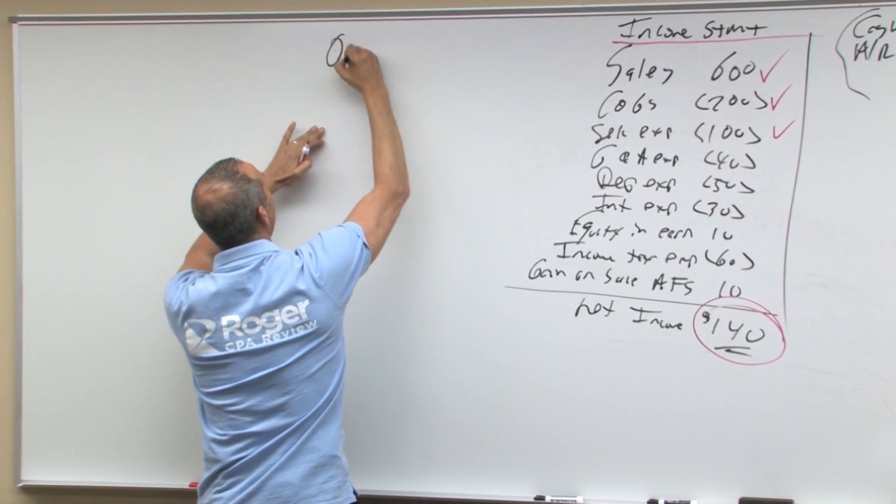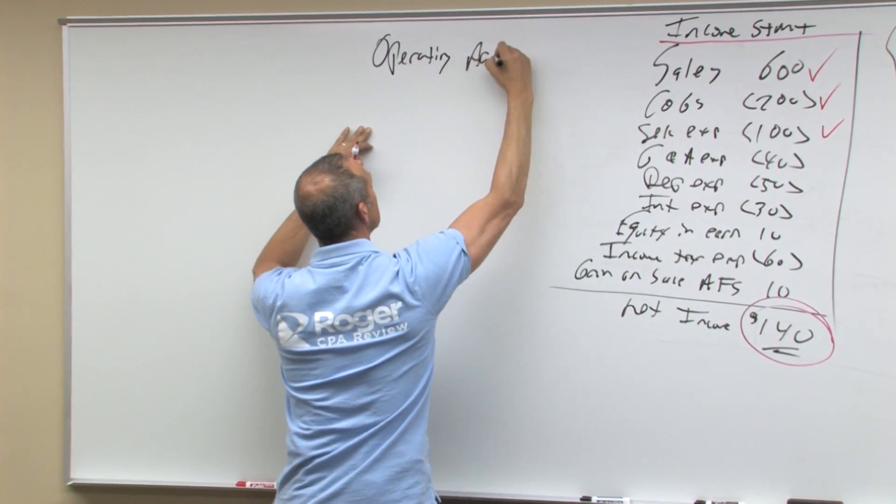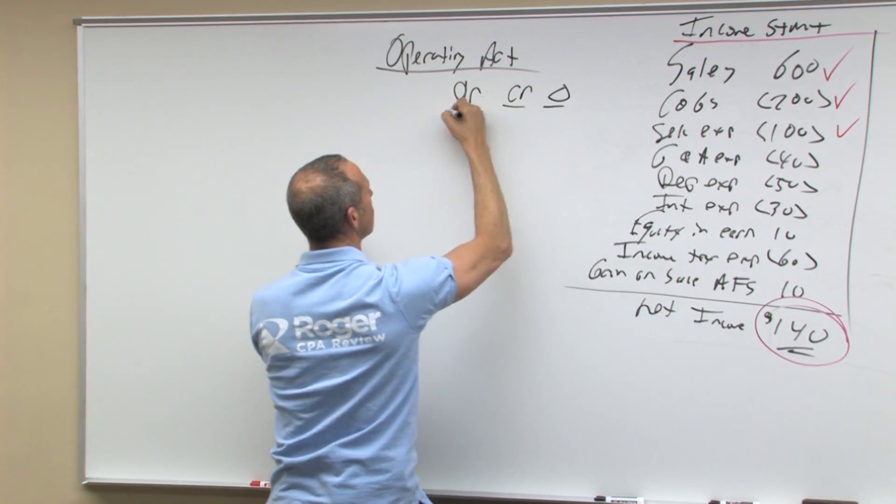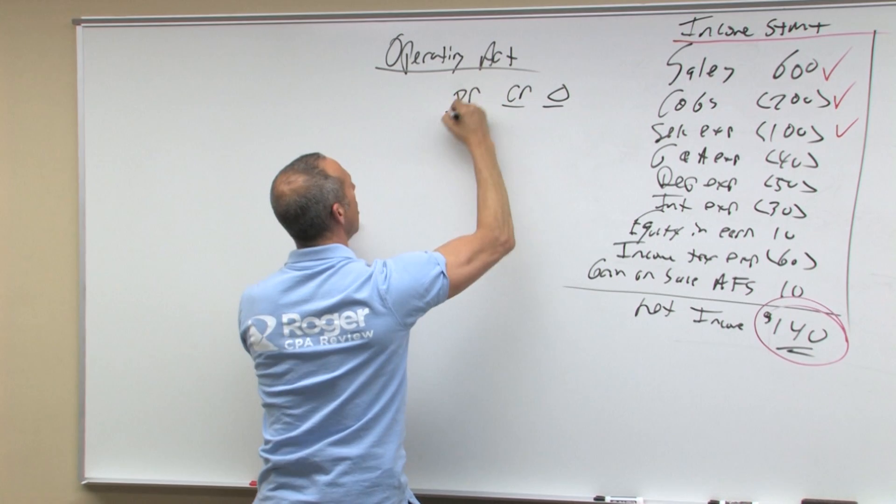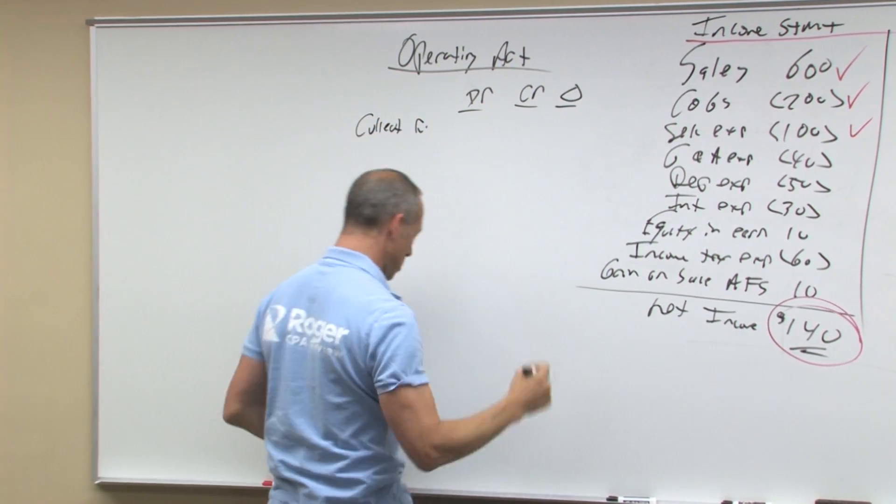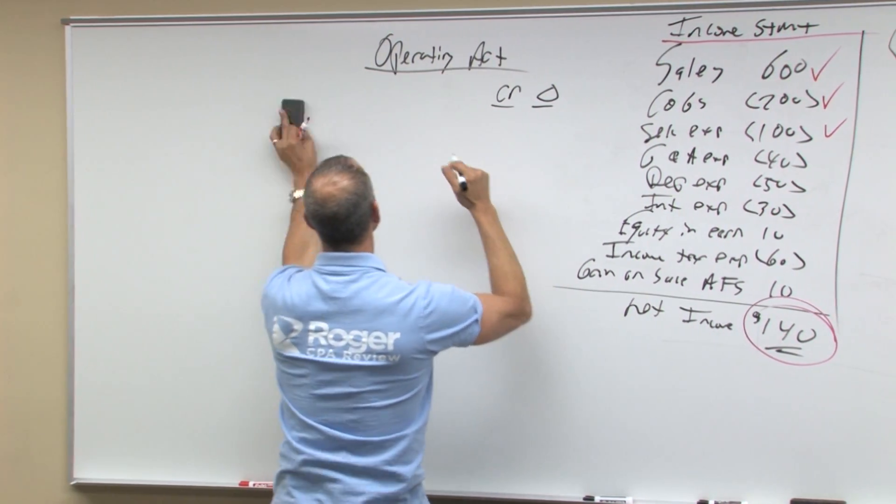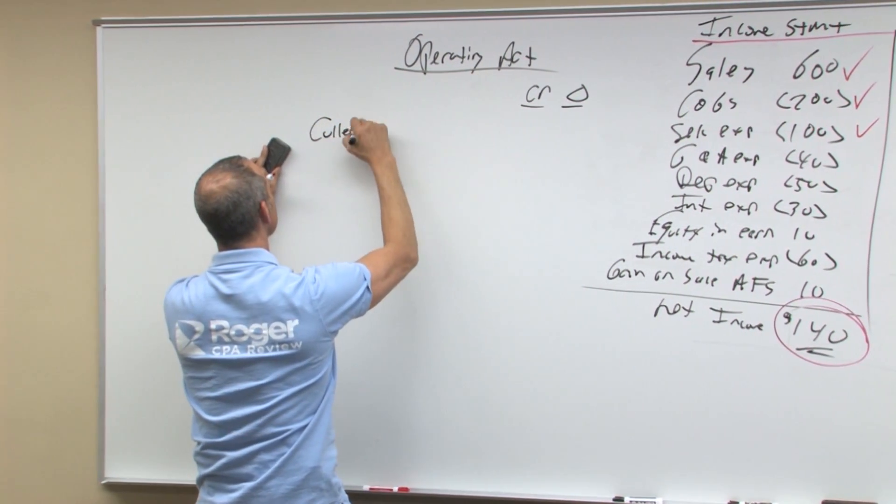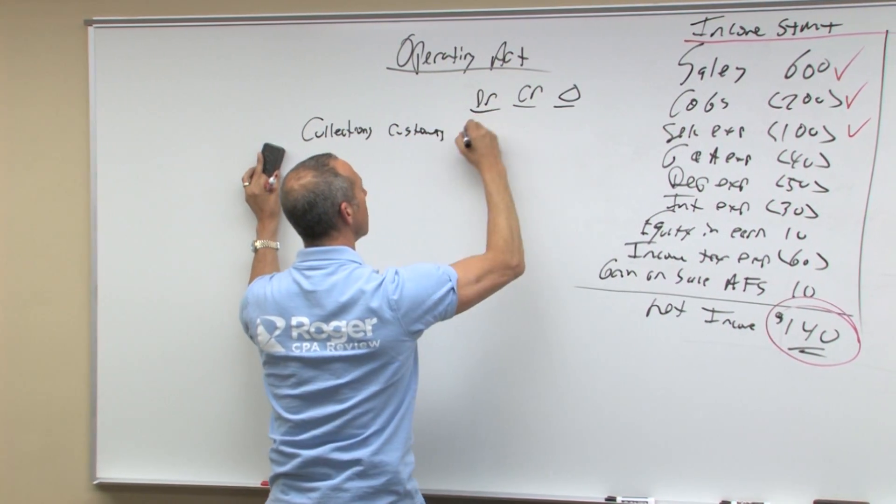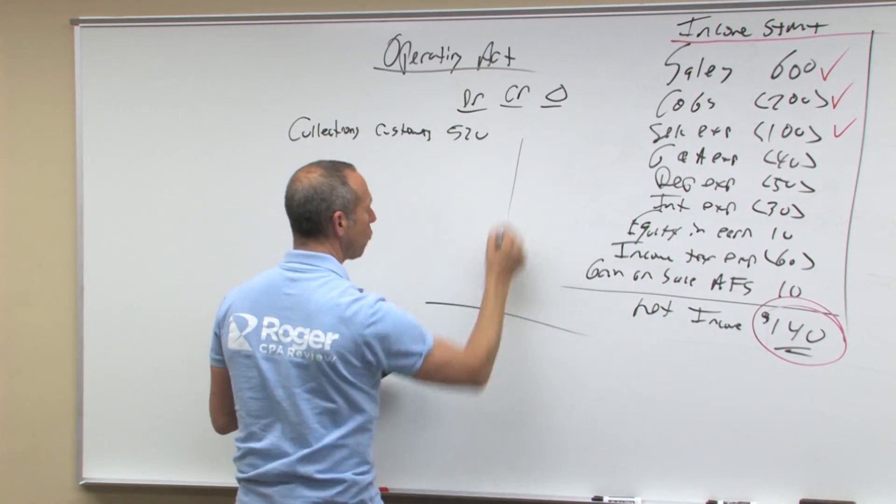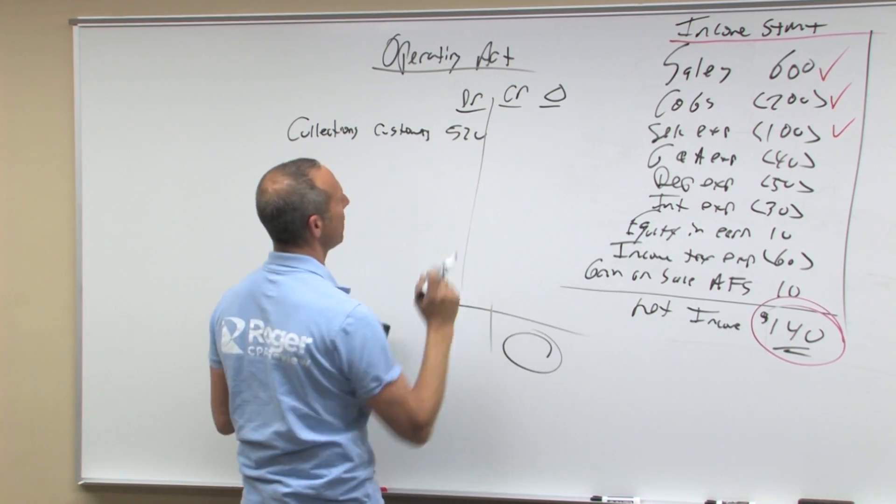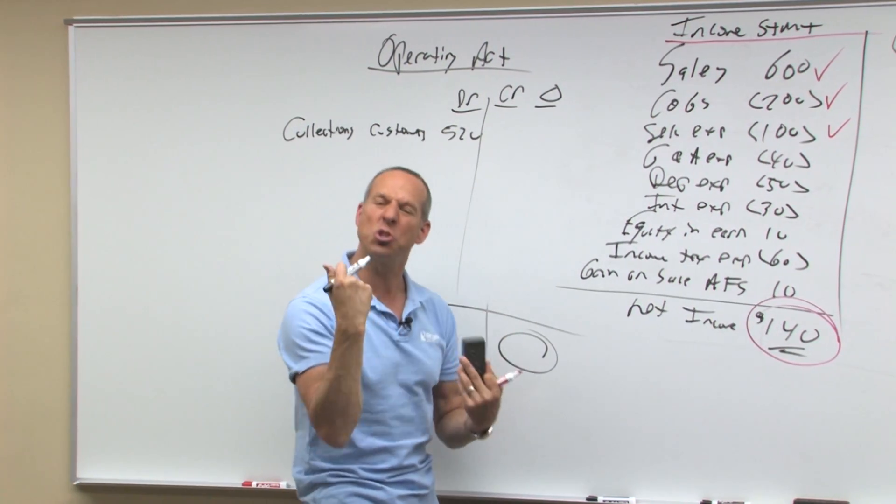So on my statement of cash flows, on your operating activity section. Operating activity has the account, has a debit, has a credit, has a change. So what this means is right now I would say collections from customers, and that's a debit, 520. So I know that 520 of whatever this amount is came in from this activity.